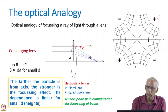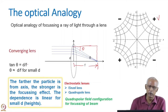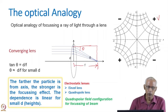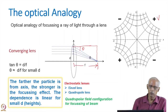So if the farther the particle is from the axis, the stronger is the focusing force. Therefore it depends linearly for small distance D from the optic axis. Now, in electrostatic lenses there are two types: one is called the Einzel lens and the other is called the quadrupole lens — the electrostatic quadrupole lens.